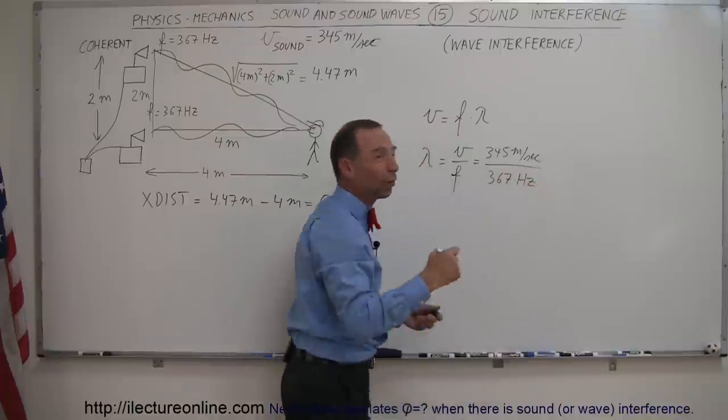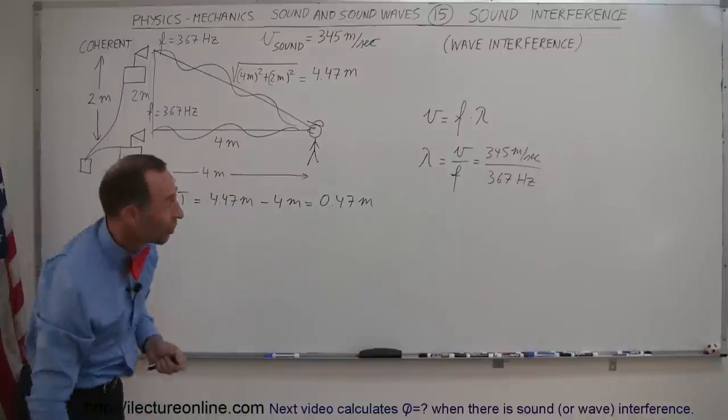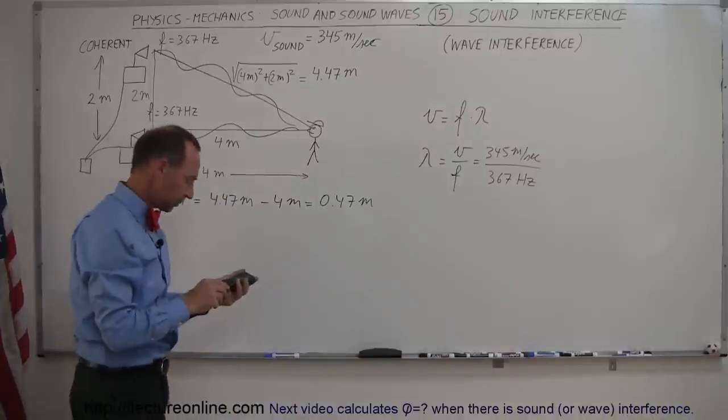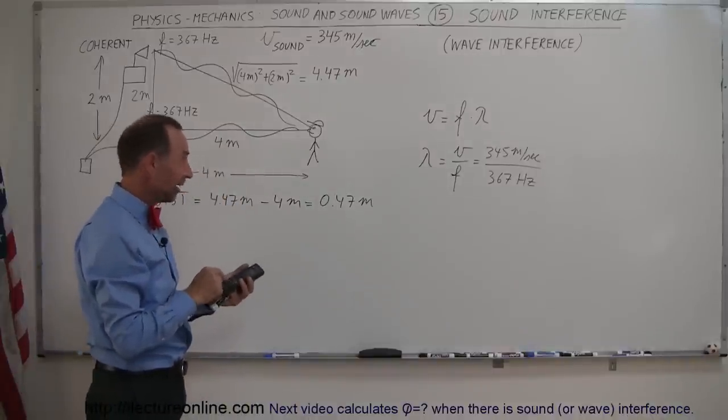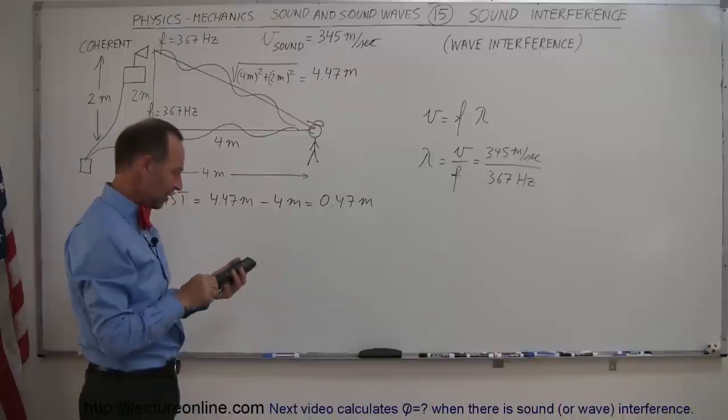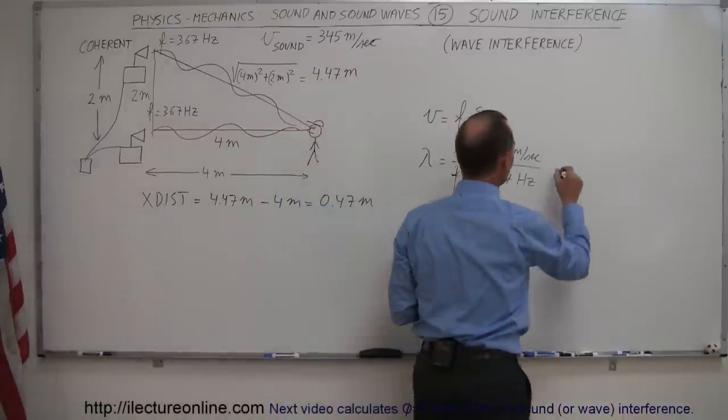That would be hertz the same as one over seconds, so that means you'll end up with meters. So 345 divided by 367, and I get 0.94 meters.